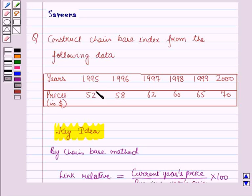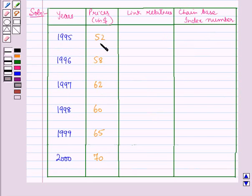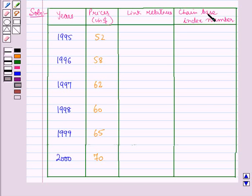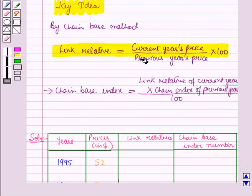First of all, let us draw a table for the given data in which we will find the link relatives and the chain base indices. In the first column we have written the years, in the second column the prices in dollars, in the next column we will find the link relatives, and in the last column we will find the chain base index numbers.